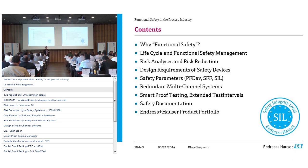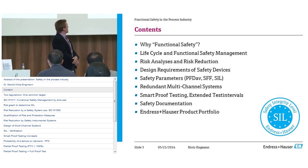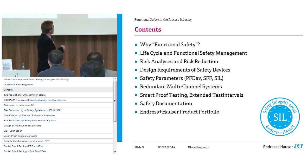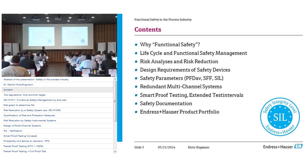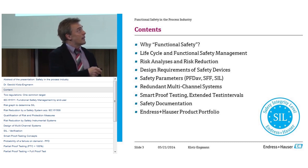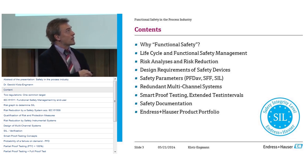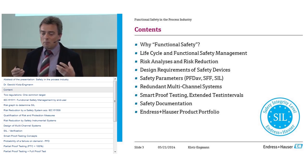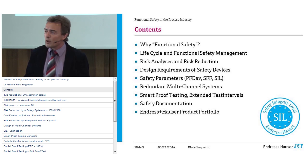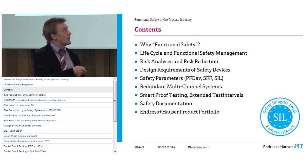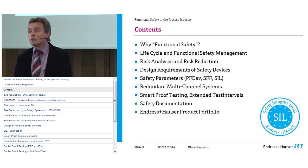I will talk about: first, why we need functional safety and what the purpose and advantage is; then the life cycle of functions and functional safety management; the risk analysis and risk reduction as the first step; then design requirements of safety devices; the relevant safety parameters and how we calculate functional safety and the SIL level; redundant multi-channel systems to increase safety; smart proof testing to reduce the amount of work and increase proof test intervals; and finally the relevant safety documentation, plus a short overview of Endress+Hauser safety devices.